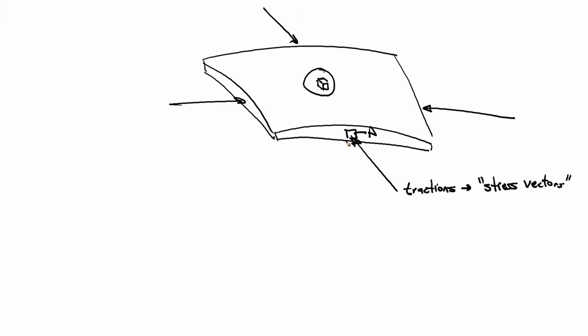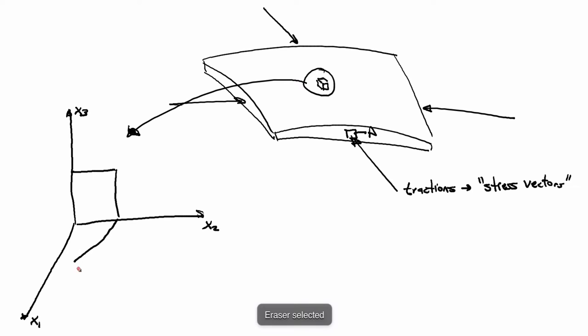So what I'm going to do is I'm going to pull out my infinitesimally small cube, and I'm going to stick it onto a coordinate axis. So the coordinate axis will be like this. And we'll call this X1, X2, X3, and then we'll put the cube on it.